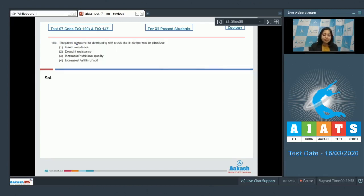The prime objective for developing GM crops like BT cotton was to introduce insect resistance - is correct, as BT crops contain cry genes which code for cry proteins which are toxic to insects.